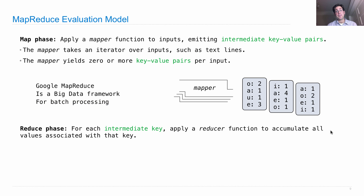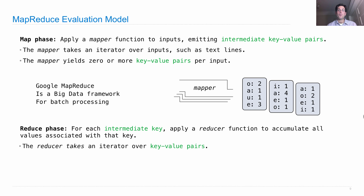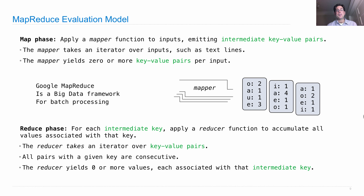Then there's a reduce phase after the map phase. For each intermediate key, we apply a reducer function to accumulate all values associated with that key. In the example, the vowels are the keys and the numbers are the values — if we want to know how many o's there are in total, we sum up all the values. The reducer takes an iterator over key-value pairs, and all pairs for a given key are always consecutive. That's an important part of the processing — we always get all the values for a given key in a row, and the reducer yields zero or more values each associated with that key.